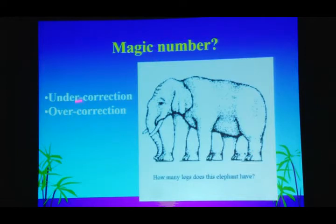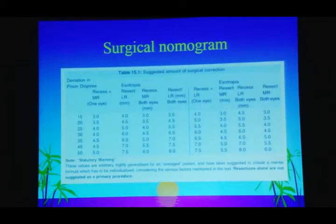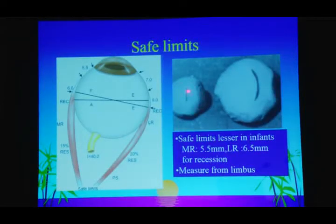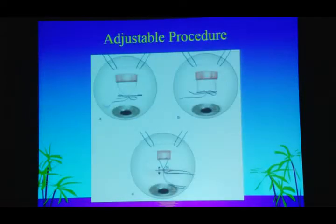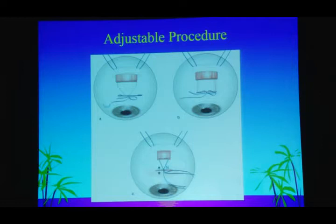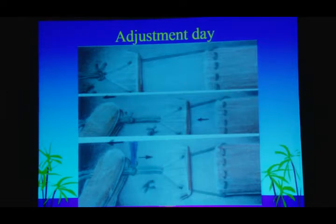What is the magic number to operate? Most strabismologists can't answer. The problems are only two: under or over correction. Surgical normograms exist but must be used with discretion — in smaller eyes like an infant, results differ. For a myope, more correction is needed; for a hypermetrope, less. An adjustable procedure can be done in demanding patients using a semi-hangback, full hangback, or sliding noose technique. On adjustment day you can pull forward, leave in place, or recess to correct the deviation. We prefer a bow-tie knot to release and adjust.